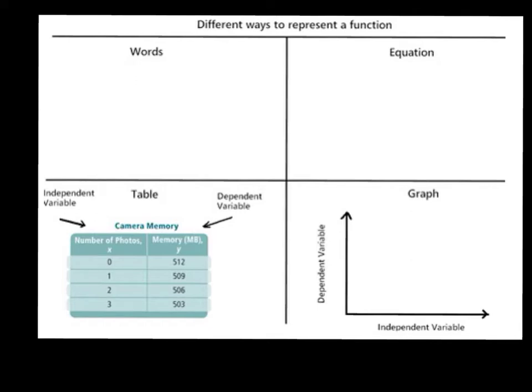Different ways to represent a function here. This chart is going to look very familiar to you. Let's take a look at our table first. We've already talked about our independent variable being the photos and the dependent variable being the memory. But we need to find a pattern here.